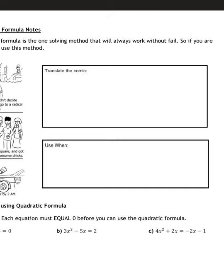Go ahead and pause the video and try to translate the comic by yourself. Walking through it: a 'bad boy' — so we got a negative bad boy, a negative b — could not decide whether or not to go to a radical party, so he could not decide plus or minus radical, meaning square root. But he was being square, so the bad boy is being squared, and got turned down by four awesome jacks for a c. And it was all over by 2 a.m. So this is the quadratic formula: x equals negative b plus or minus the square root of b squared minus 4ac, all over 2a.